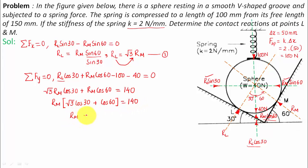It's going to be equal to R_M times root 3 cos 30 plus cos 60 equals 140. And R_M shall be equal to, let me do this calculation first, 140 divided by root 3 times cos 30 plus cos 60. And it works out as 2.